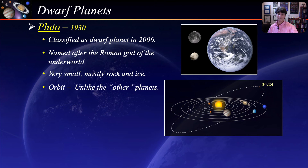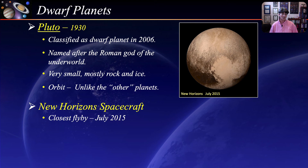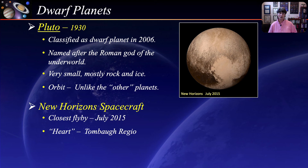In July 2015, the New Horizons spacecraft made its closest approach to Pluto, becoming the first and only spacecraft to do so. During its brief flyby, it made detailed measurements and observations of Pluto and its moons, providing the first-ever close-up images. An interesting surface feature is a heart-shaped region called the Tombaugh Regio, almost 1,000 miles across, consisting of two geologically distinct lobes. The smooth lobe is called Sputnik Planitia and is thought to be a large impact crater filled with nitrogen snow.